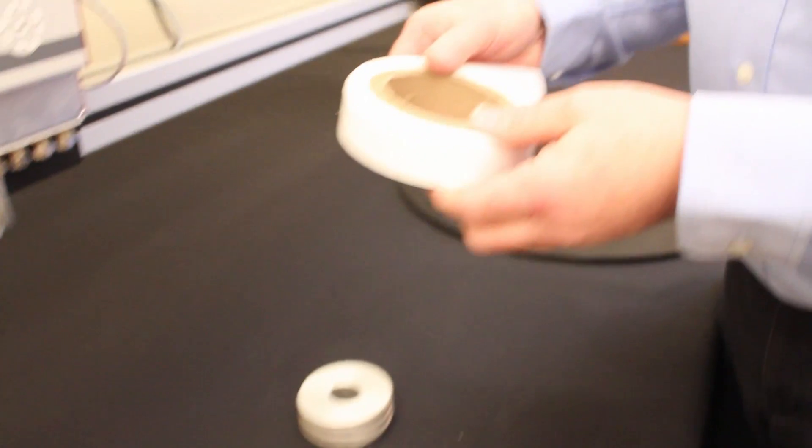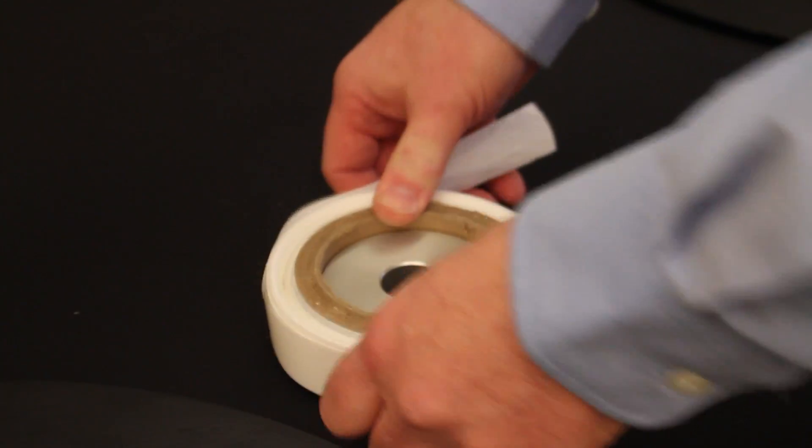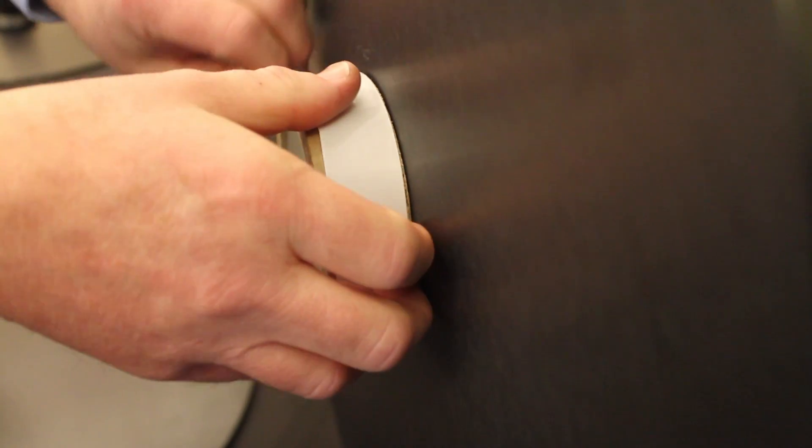Changing spools is as easy as releasing the FastLock and removing the outer safety plate, removing the spring-loaded spindle adapter,